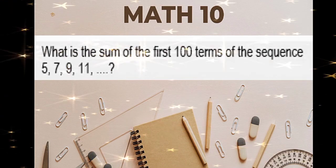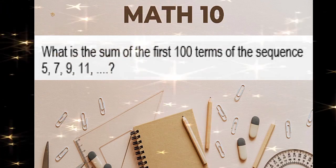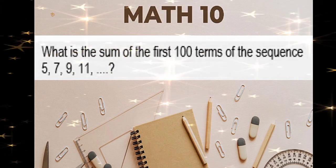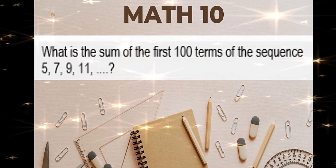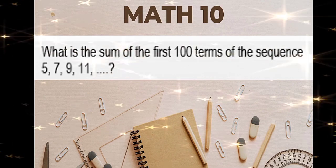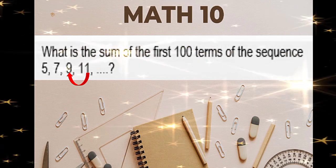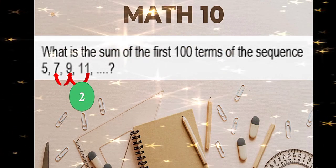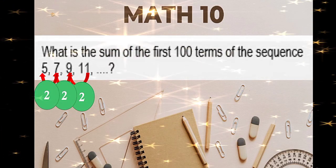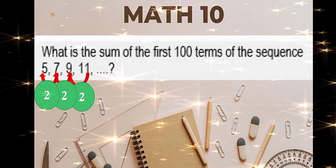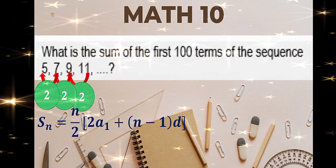What is the sum of the first 100 terms of the sequence 5, 7, 9, 11? We will check whether this sequence is arithmetic by finding the common difference. 11 minus 9 is 2. 9 minus 7 is 2. And 7 minus 5 is 2. This is the common difference. Therefore, it is an arithmetic sequence. Since we're looking for the sum of the first 100 terms, the formula for this is the series of a finite arithmetic sequence.